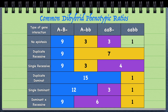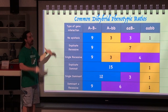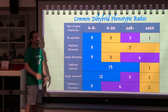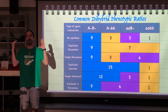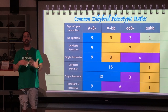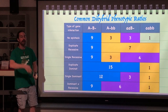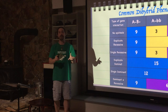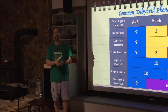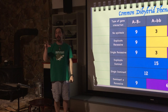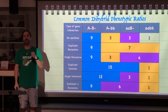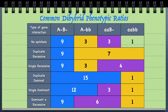This leads us to the diagram showing the different types of gene interactions and phenotypic ratios with epistatic relationships. With no epistasis, crossing two heterozygous organisms gives the 9:3:3:1 ratio — nine-sixteenths dominant for both traits, three-sixteenths dominant for the first and recessive for the second, three-sixteenths dominant for the second and recessive for the first, and one-sixteenth recessive for both.